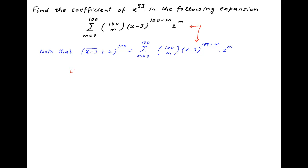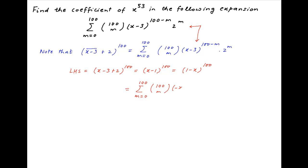The left-hand side is equal to (x - 1)^100, which is the same as (1 - x)^100. The binomial expansion of this is the summation of 100 choose m, multiplied by (-x)^m, where m varies from 0 to 100.